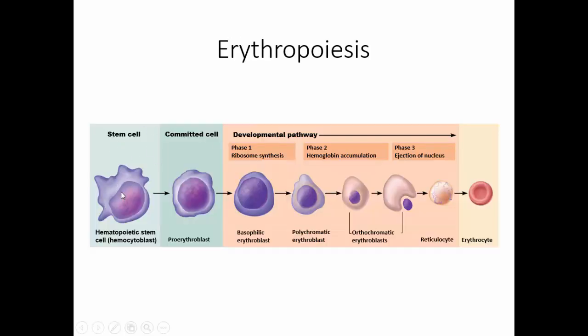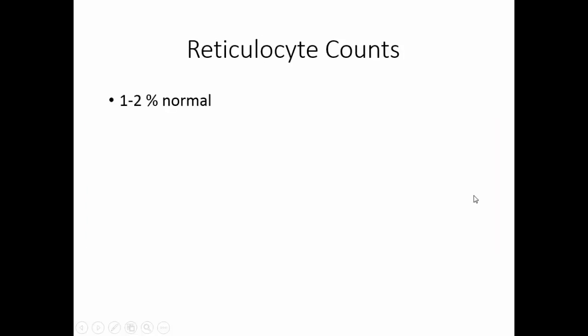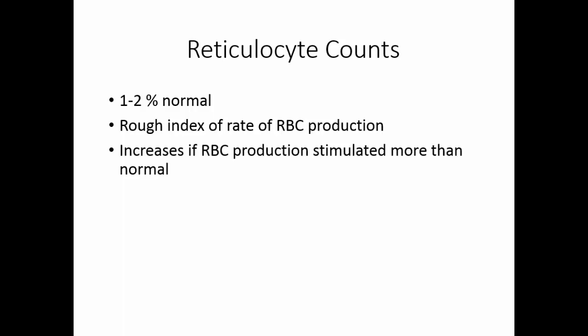Erythropoiesis is the formation of red blood cells. The hematopoietic stem cell produces a committed daughter cell, and all cells from that line will be red blood cells. After several phases of development, it gets rid of the nucleus, becomes a reticulocyte, and then an erythrocyte. A few reticulocytes do end up in circulation and mature there. A reticulocyte count of 1% to 2% is normal and is a rough index of red blood cell production rate.